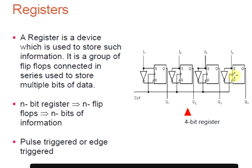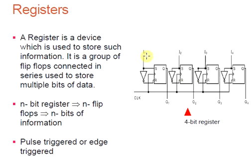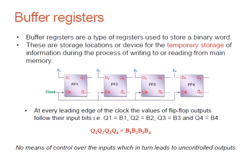The inputs are given as I1, I2, I3, and I4, and the outputs are taken along Q1, Q2, Q3, and Q4. A buffer register is the simplest type of register, which is used to store a binary word of information. It is normally used as temporary storage of information, either when writing or reading information from memory.